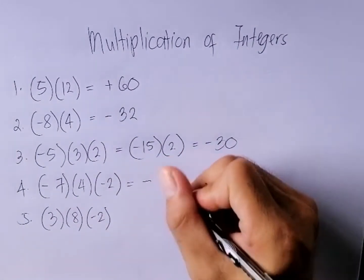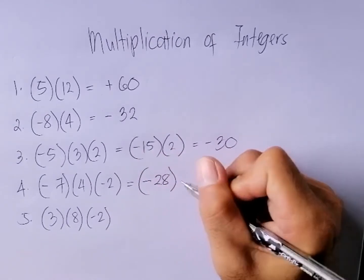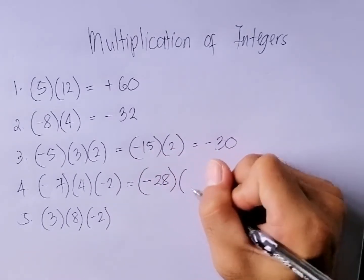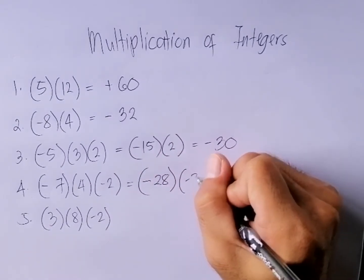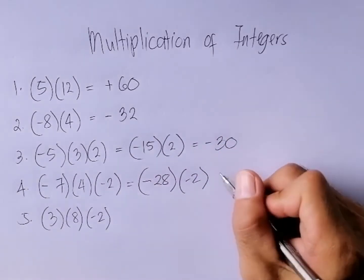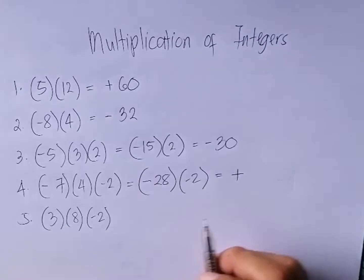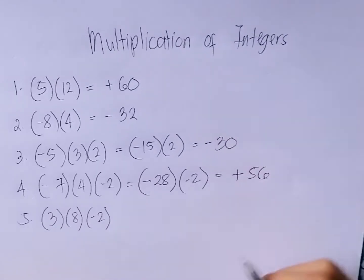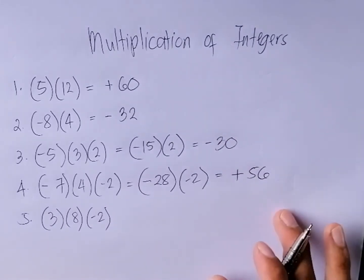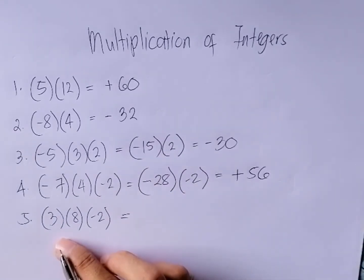Number four: negative seven times positive four is negative twenty-eight, then times negative two. Negative times negative is equal to positive, then twenty-eight times two is equal to fifty-six. Therefore the answer is positive fifty-six.